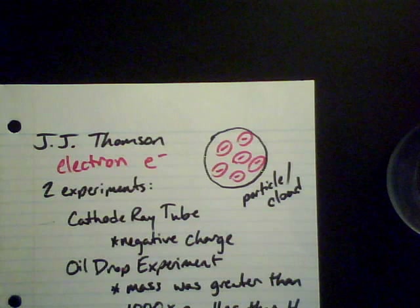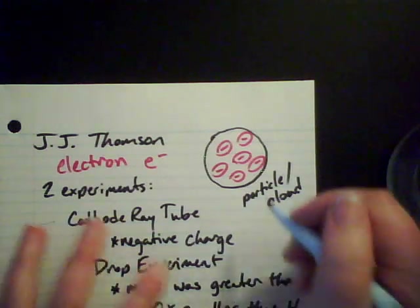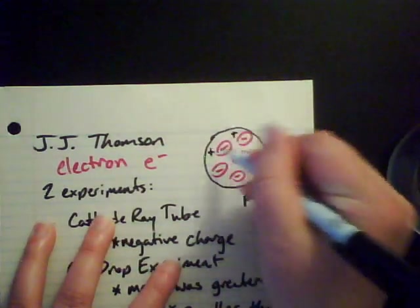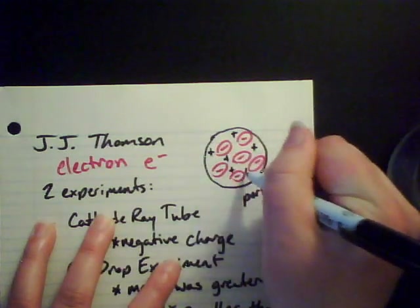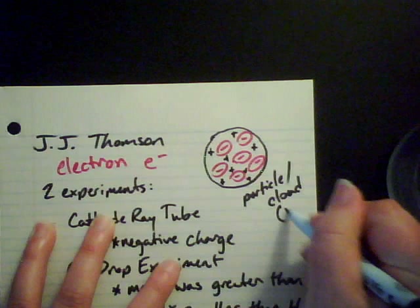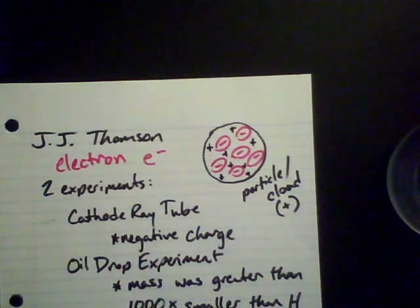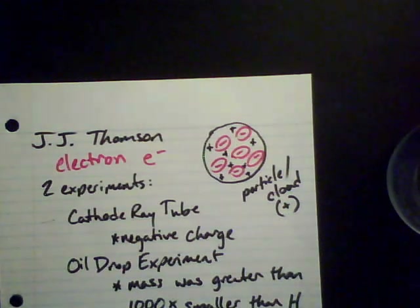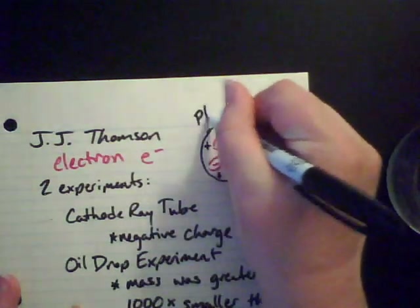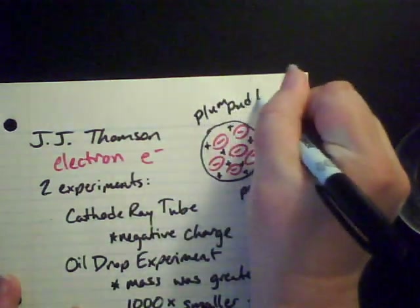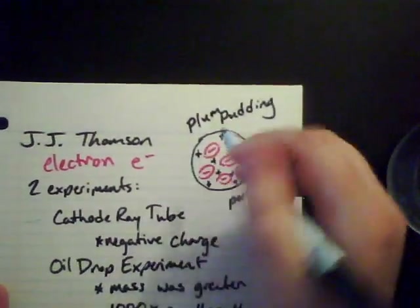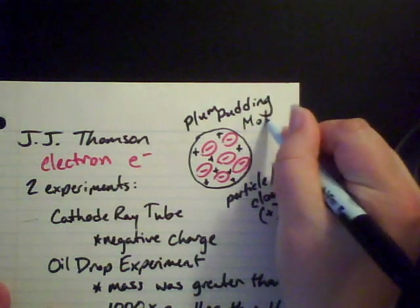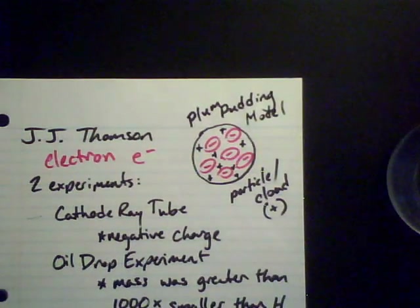So J.J. Thompson said that in his model of the atom, this particle or cloud has got to be positive — a positively charged particle — so that overall the thing is neutral. These positively charged particles with these negatively charged electrons embedded in them — because he is British — this model is called the plum pudding model, where the pudding is the positively charged particle and the plums are the negatively charged electrons. That's J.J. Thompson's model of the atom.